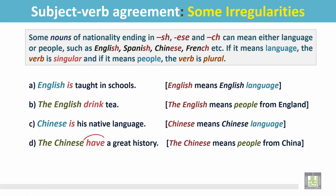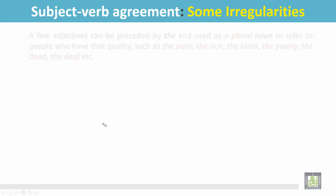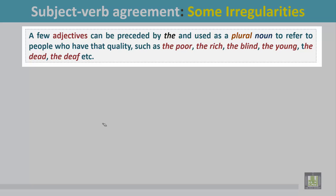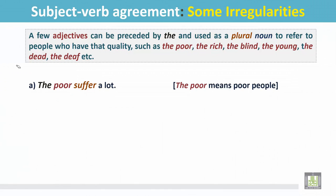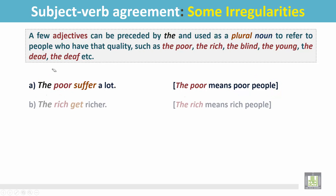'The Chinese have a great history.' The Chinese is the subject and means people from China, so the verb is plural: have. A few adjectives can be preceded by 'the' and used as a plural noun to refer to people who have that quality — such as the poor, the rich, the blind, the young, the dead, the deaf, etc. 'The poor suffer a lot.' The poor means poor people, not a single person — it means the group of poor people. 'The rich get richer.' The rich means rich people, not a single rich person, so the verb is plural: get.